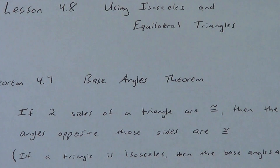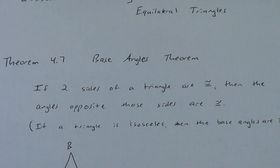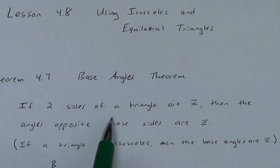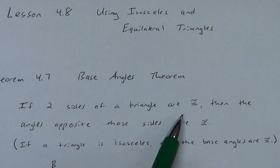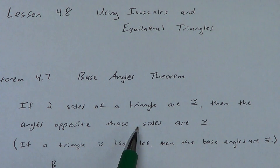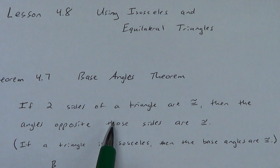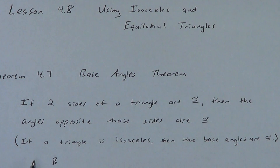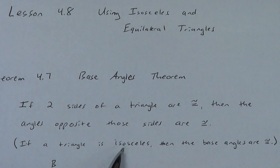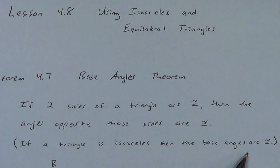Let me zoom out a little bit so we can get all this in the picture at the same time. If two sides of a triangle are congruent, then the angles opposite those sides are congruent. Another way to say this: if a triangle is isosceles — remember, two sides of a triangle being congruent means it's isosceles — then the base angles are congruent.